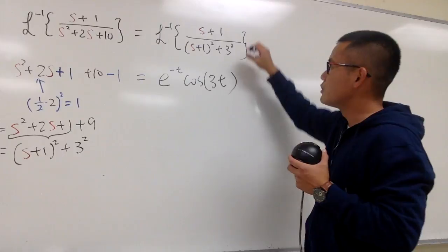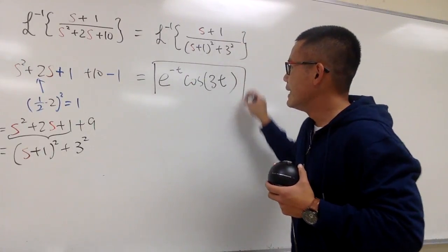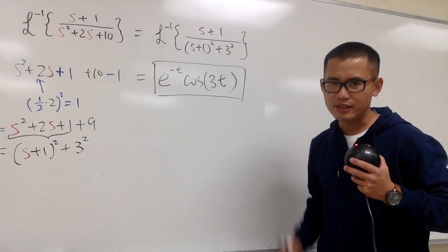For the sine, you have to make sure on the top you have the correct number. But this is it. e to the negative t times cosine of 3t. That's it.